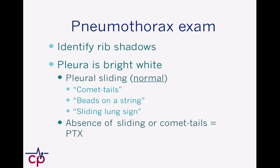The presence of sliding is normal. And as opposed to the FAST exam, where the presence of a hypoechoic or dark structure represents fluid and that's bad, this is a little different conceptually because it's the absence of a finding — namely this pleural sliding — that is abnormal, as opposed to the presence of blood in the abdomen, which is the abnormal finding there. We call this pleural sliding a couple of different names: comet tails or beads on a string, or the sliding lung sign.